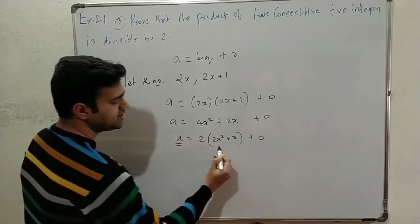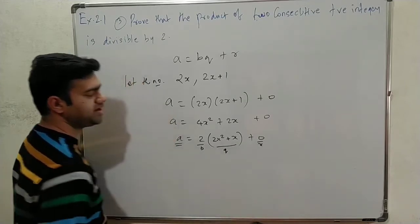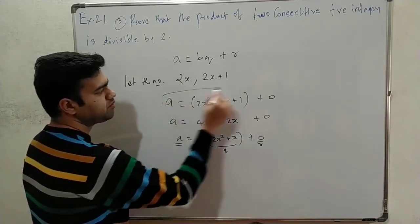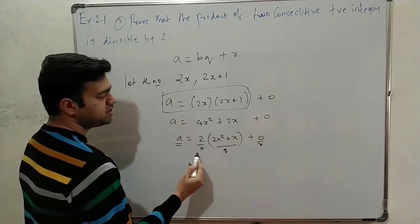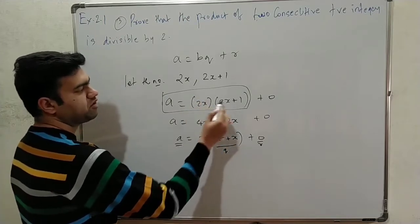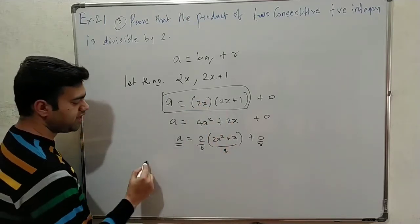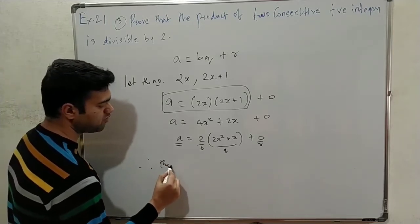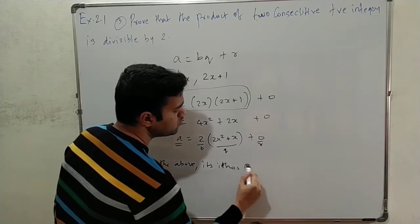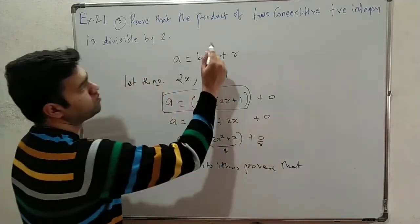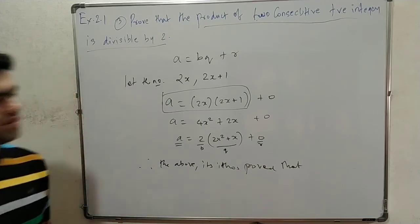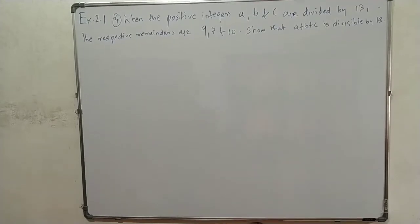So A = 2(2x² + x) + 0. Since the remainder R = 0 when divided by 2, therefore the product of 2 consecutive positive integers is divisible by 2. Thus proved.